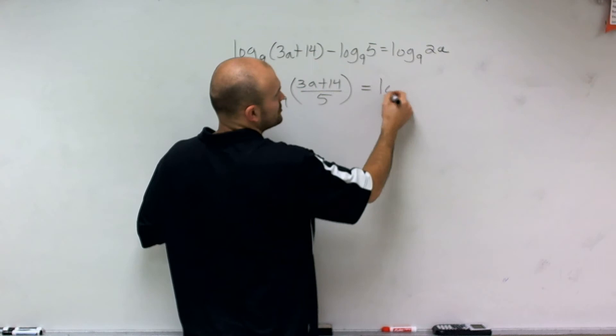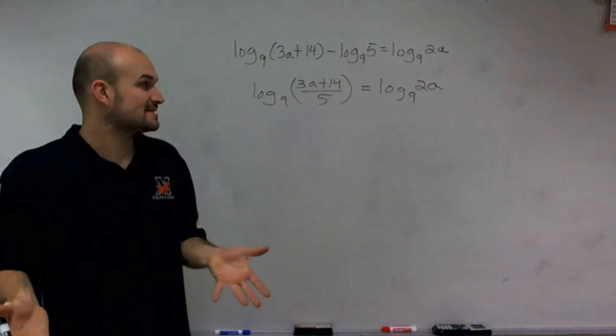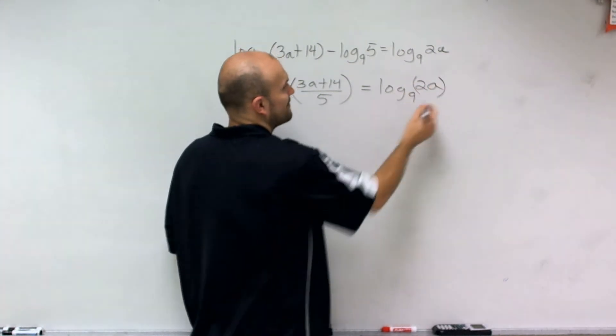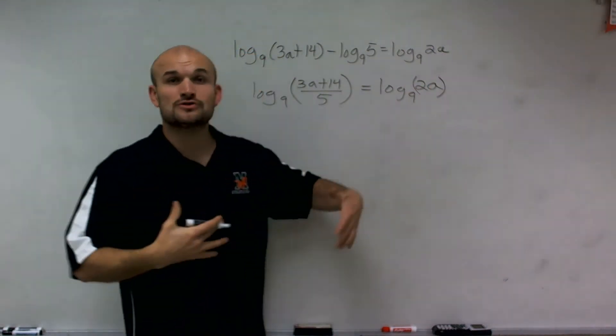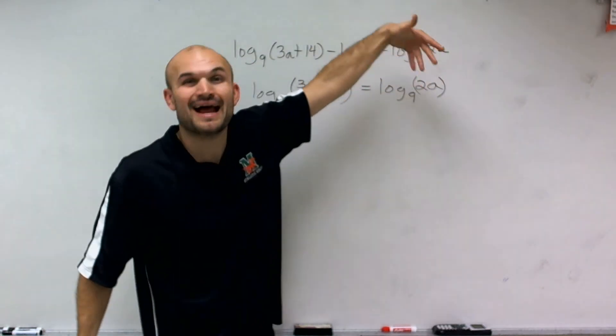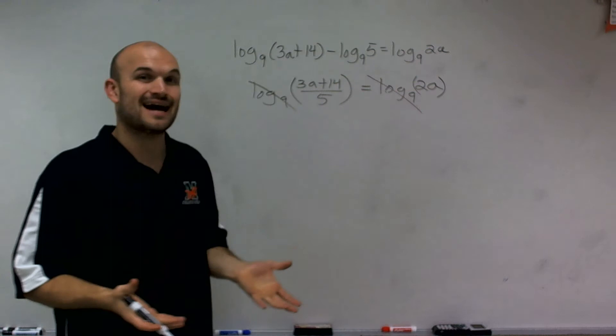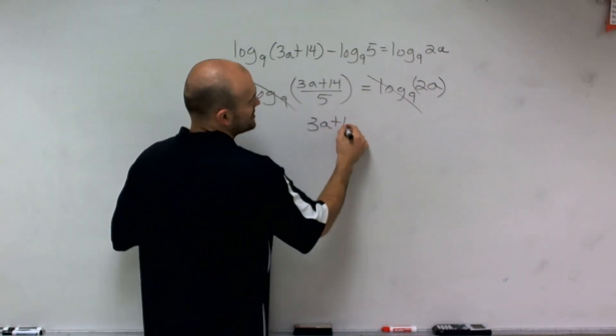Now that's equal to log base 9 of 2a. And what's important about this now is you see that now I have a logarithm base 9 equal to another logarithm base 9, meaning that what we're evaluating them for has to be exactly the same. So our logarithms are really no longer going to be relevant. And now we're just going to simply have an equation.